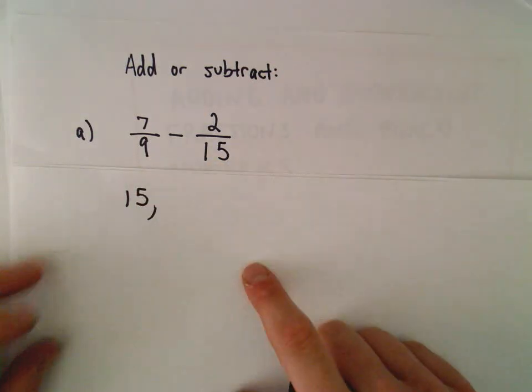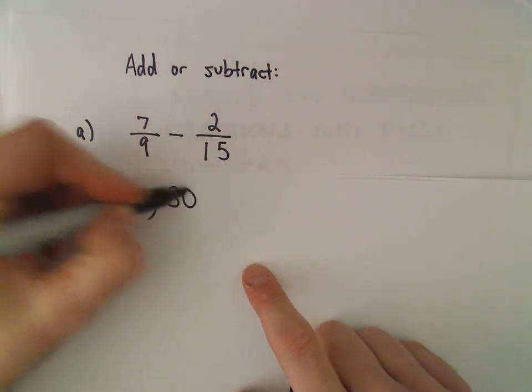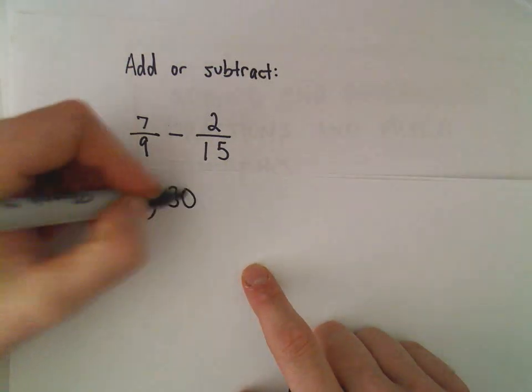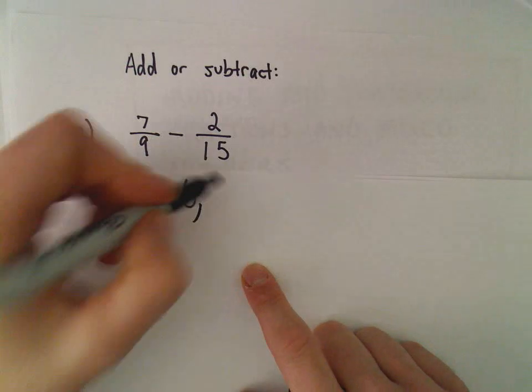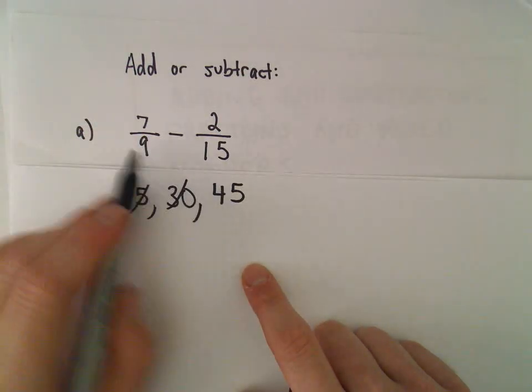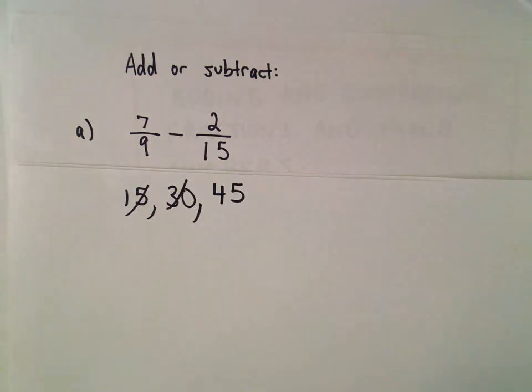So 15 is not divisible by 9, so that doesn't work. The next multiple would be 30, which is not divisible by 9, so that one doesn't work. The next multiple of 15 would be 45. Well, 45 is divisible by 9, so that works.